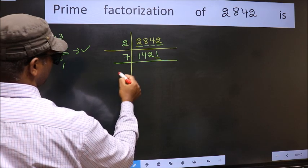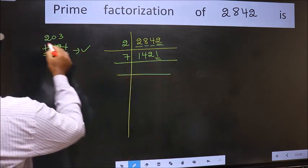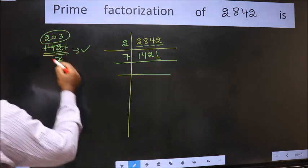So 7 here. And here we should write this number 2, 0, 3.